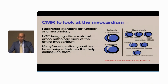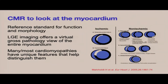This diagram illustrates the different pathologies and the different patterns of LGE, which we can use to identify the cause of cardiomyopathy. CMR offers a virtual gross pathology view of the entire heart, and many — if not most — cardiomyopathies have unique features. These can be used to identify the cause and to distinguish between different causes.